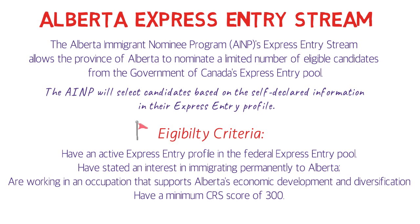Two important points: when creating your Express Entry profile, it asks for your province of interest. You should select either Alberta or all provinces. To be safe, I suggest selecting all provinces — that way you can apply for other provinces as well and also have a chance for Ontario's Human Capital Priority stream.